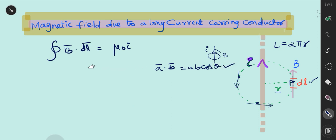By applying this formula here, we get closed integral of B bar dot DL bar can be written as B·DL·cos θ is equal to μ₀I.